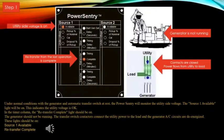Step 1: Under normal conditions with the generator and automatic transfer switch at rest, the power sentry will monitor the utility side voltage. The source one available light will be on, indicating the utility voltage is okay. In the timer column, the re-transfer complete light should be on. The generator should not be running. The transfer switch contactors connect utility power to the load and the generator AC circuits are de-energized.